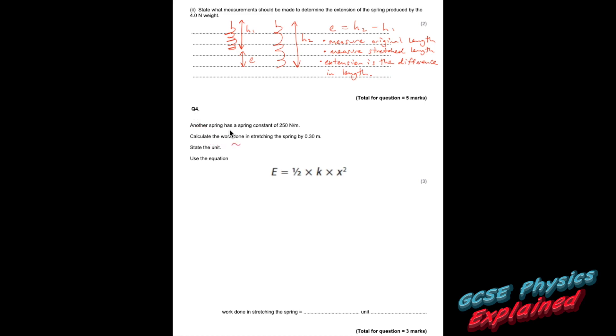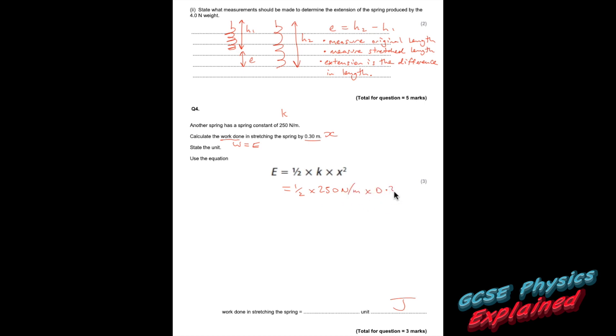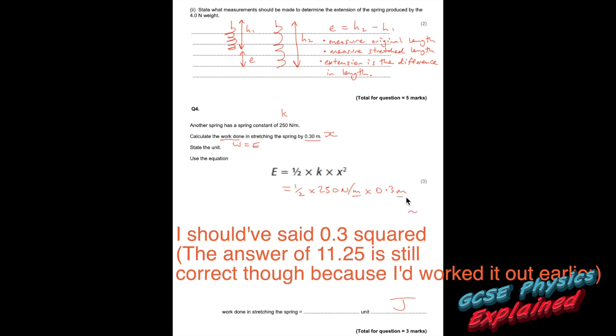Question 4. Another spring has a spring constant of 250 newtons per metre. Calculate the work done in stretching the spring by 0.3 metres. That's your extension and that's your spring constant. The unit of work done or energy transfer is always joules. Using E equals a half times K times x squared — that's a half times 250 times 0.3. Double check that's in metres — yes it is. That equals 11.25 joules.